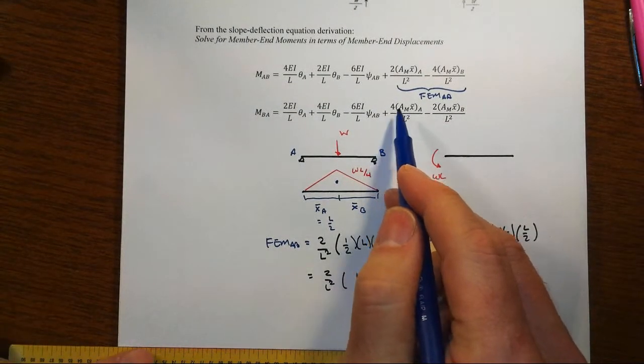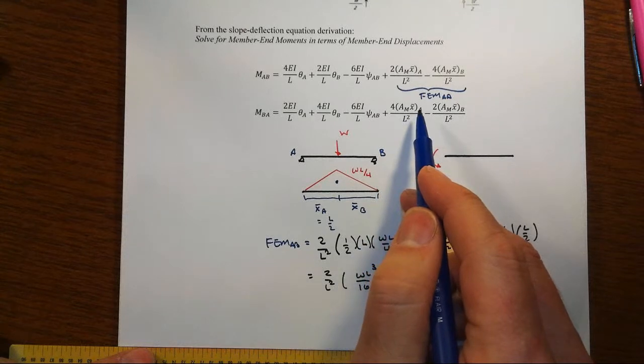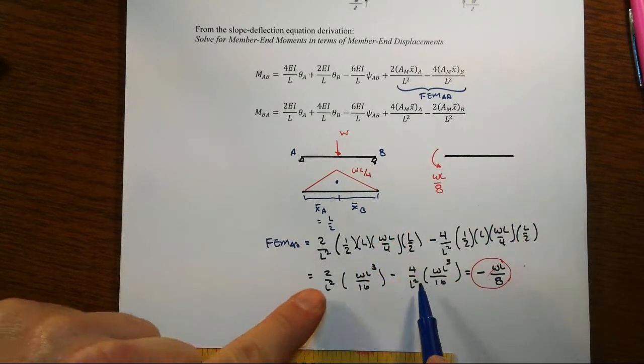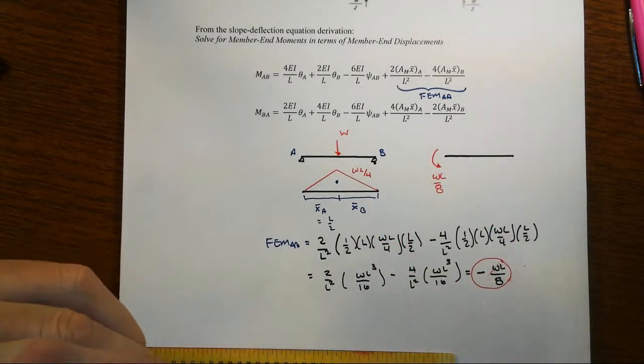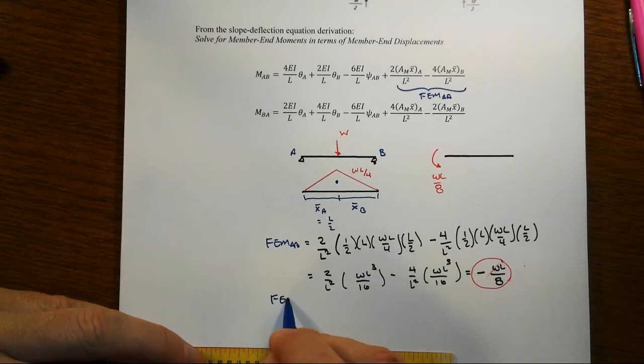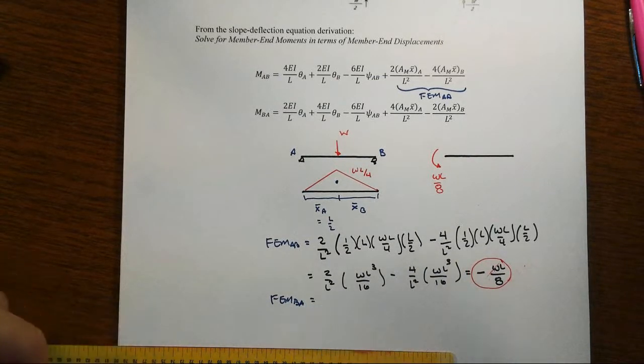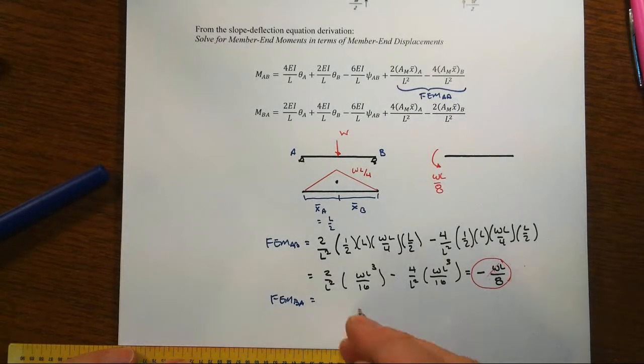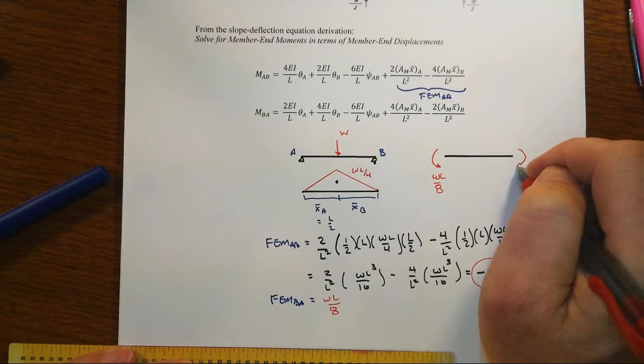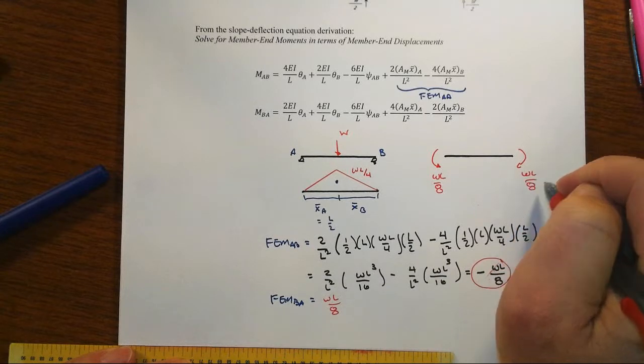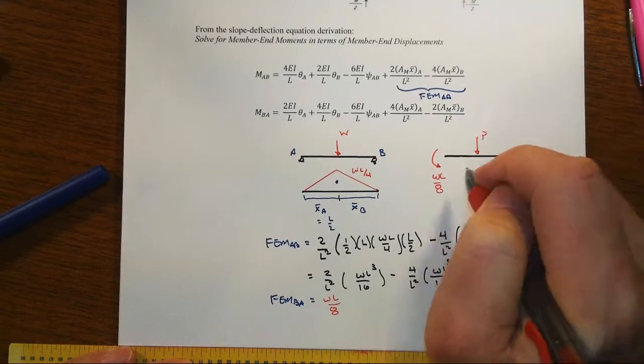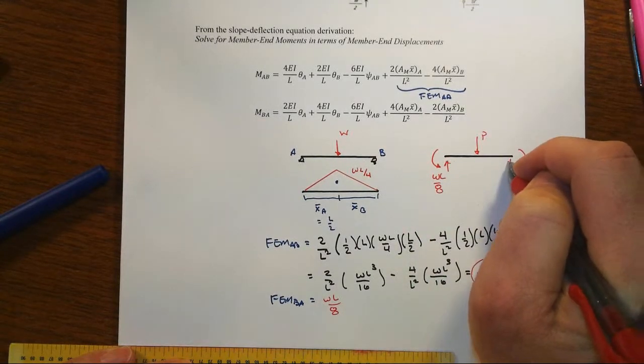When we go do the same thing, note that the 4 and the 2s swap roles here, and in our case then it's really easy to see that the fixed end moment term BA is just going to be the positive WL over 8. In this case, positive means clockwise, so there's your WL over 8. Here's the actual loads that go with that.